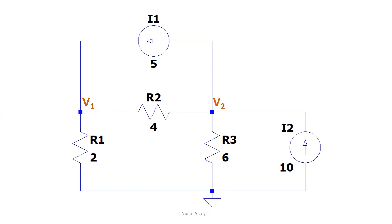Before we proceed, this one is a current source — it's different from the voltage source, so the symbol is different. We have 5 amperes as current source 1 and 10 amperes for current source 2.